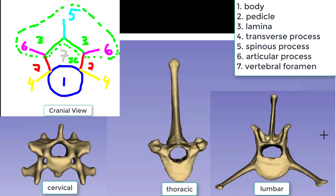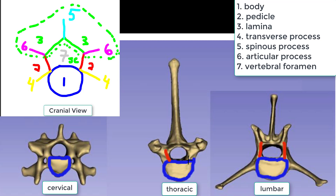We can apply this line drawing to all of the specific vertebrae to easily identify the different structures with less memorization. Here are the three types: lumbar, thoracic, and cervical. You can easily see the body — the base — on all three. Next, we'll identify the pedicles on each, and then we'll draw in the anatomical lamina. Matching colors as we go.